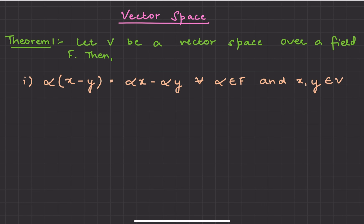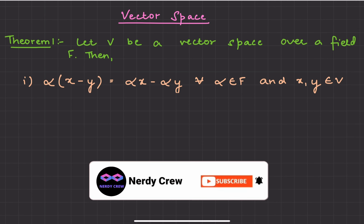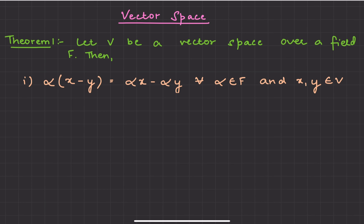So again, we have given two sets: one vector space and one field. The element alpha belongs to the field, and x and y are vector elements. We are required to prove that alpha times (x minus y) equals alpha x minus alpha y.